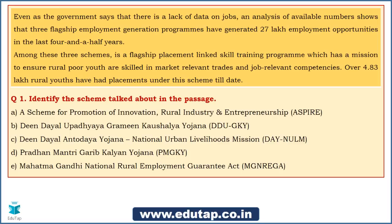The second paragraph: 'Among these 3 schemes, one is a flagship placement-linked skill training program, which has a mission to ensure rural poor youth are skilled in market-relevant trades and job-relevant competencies.' So the key phrase here is placement-linked skill training program focused on rural poor youth. It further states: 'Over 4.83 lakh rural youths have had placements under this scheme till date.' Based on this paragraph, you are required to identify the scheme being discussed.